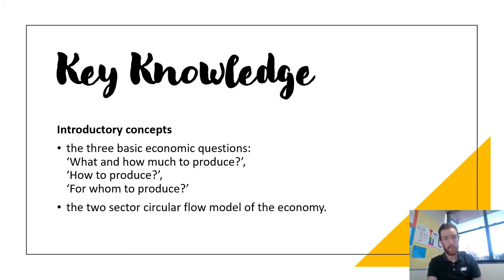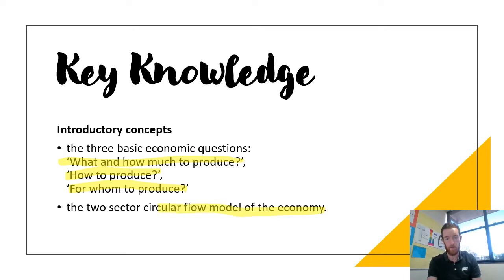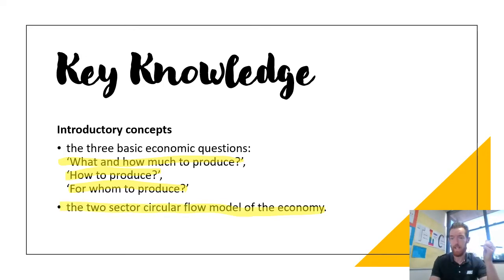We're going to be looking at the three basic economic questions: what and how much to produce, how to produce, and for whom to produce. We're going to look at the importance of those, and then we're going to look at the two-sector circular flow model of the economy, what that means, the importance of it, and basically how that impacts on economic activity.